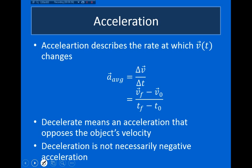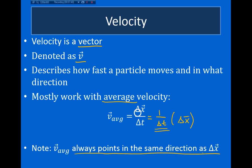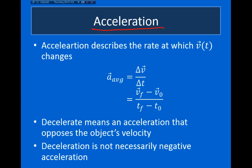If you push on the gas pedal, your velocity increases; if you push on the brake, your velocity decreases. To describe this change in velocity, we use acceleration. Average acceleration is defined in the same way as average velocity: it's the change in velocity divided by the change in time, where delta v is final velocity minus initial velocity. One important note: average acceleration is parallel to the change in velocity, not necessarily parallel to the velocity itself.